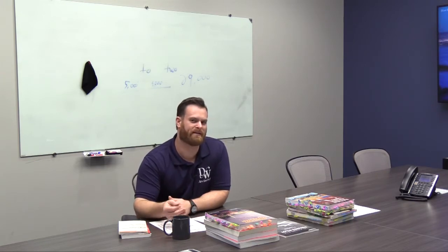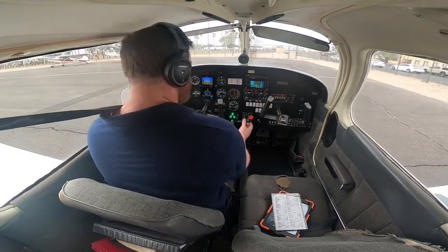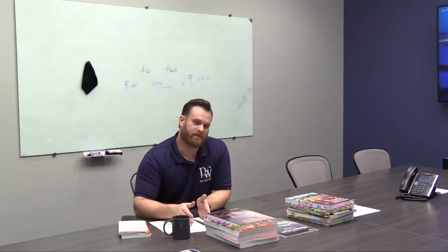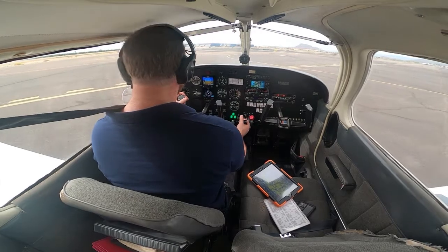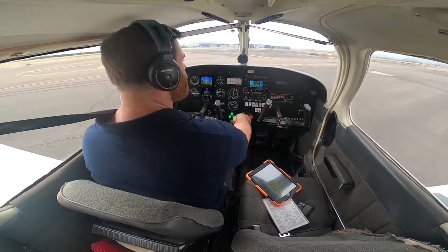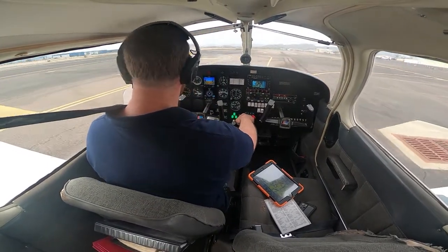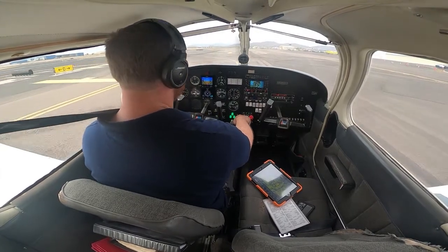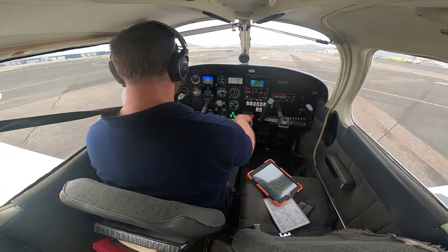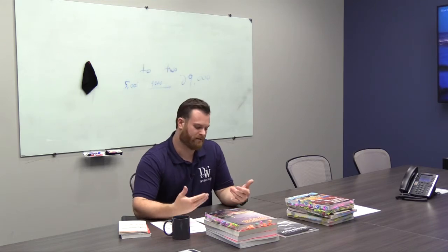Prior to taxi movement, before you even start moving off the ramp, do a brake check: clear left, center, right — brake check, good brake check. Once you're moving and have your clearance, stop before the hold short lines. Once the clearance is obtained and copied, read it back to ATC, then brief it out loud in the airplane. After that, call clear left, clear center, clear right, and tell your instructor or examiner whether you're turning left or right and which runway you're going to.